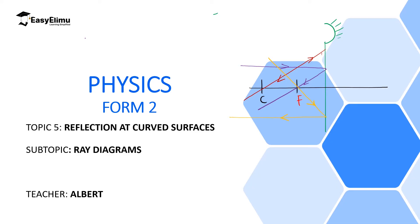Welcome to ECLIMU Learning Simplified. In the previous lesson we discussed the relationship between the focal length and the radius of curvature, which we summarized mathematically as: radius of curvature equals two times the focal length. In this lesson we are going to discuss ray diagrams, and you will need this relationship to form images on curved surfaces.